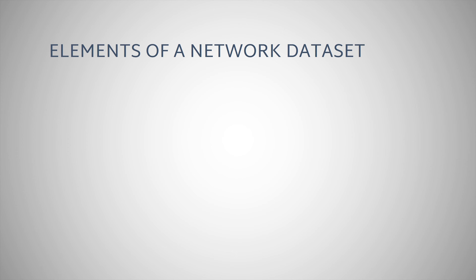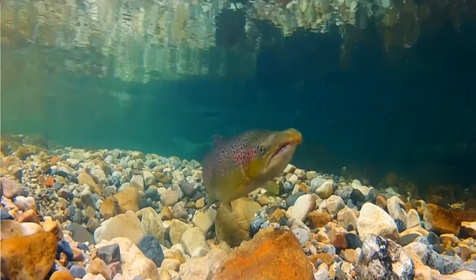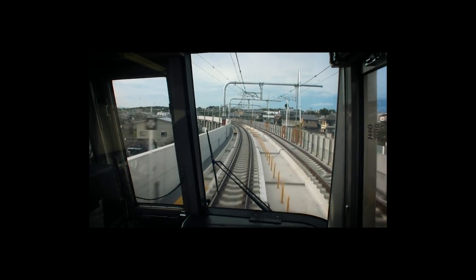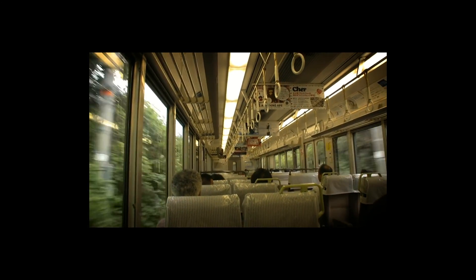A Network Data Set can be made up of the following network elements: Edges, Junctions, and Turns. Edges are the segments over which travel takes place. Line feature classes can be used as edge sources. Examples include stream segments, road segments, utility lines, and rail lines. Any number of attributes can be assigned to edges, including those that may affect travel through the network, such as travel time and direction.